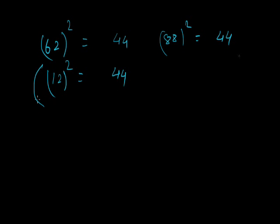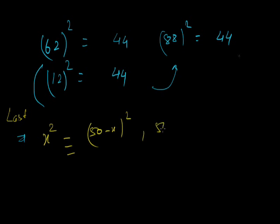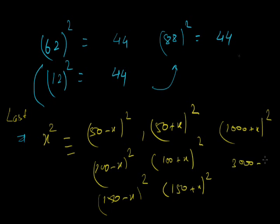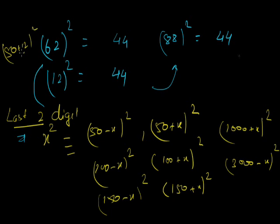The key pattern is: 62 = 50 + 12, and 88 = 100 − 12. The last two digits of x² are the same as (50 − x)², (50 + x)², (100 − x)², (100 + x)², (150 ± x)², or any multiple of 50 plus or minus x, all squared. So for 62² = (50+12)², just take the last two digits of 12², which is 44. For 88² = (100−12)², again 44.